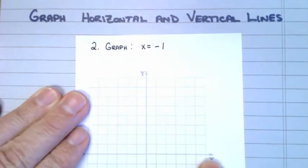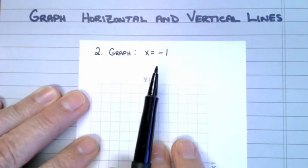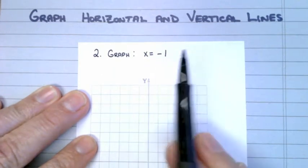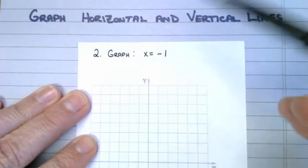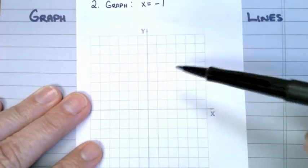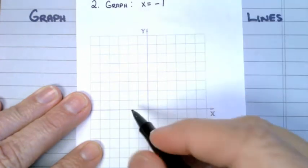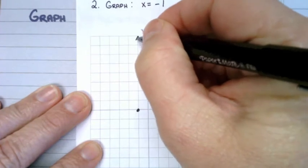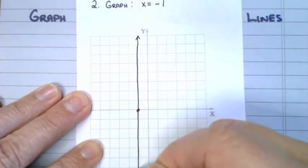Here's another example: x is equal to negative 1. As soon as I see an equation that says x is equal to negative 1, I should realize it's going to be a vertical line — a line going up and down. Where is this line going to intersect the x-axis? At negative 1. So I find negative 1 on the x-axis and then I draw a vertical line that goes through that point.